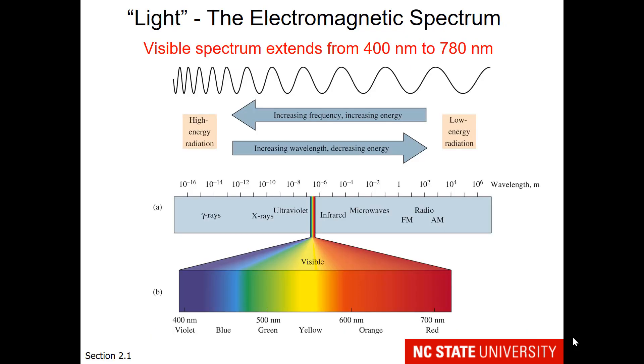Now, first off, when people talk about the electromagnetic spectrum, often they just say light. Visible light is actually a very small part of the electromagnetic spectrum. It can range anywhere from radio waves to gamma rays.